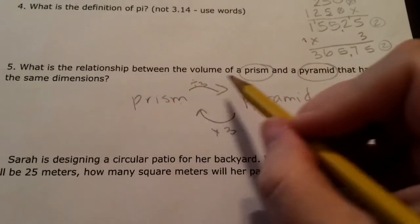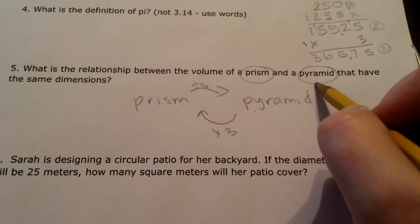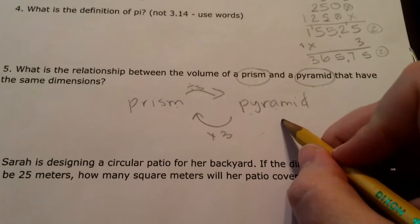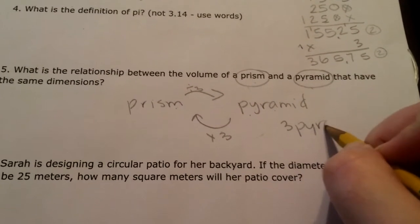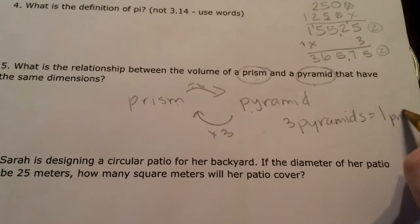Okay, so my relationship between the volume of a prism and a pyramid is, well there's two ways to think about it, right? I can write that three pyramids is equal to one prism.